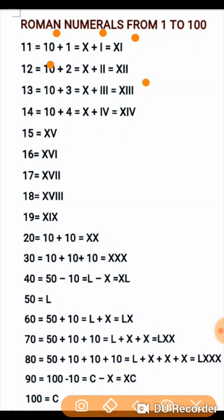Using these rules, you can easily form numbers 15, 16, 17, 18, and 19. After that, let us come to round numbers. 20 can be written as 10 plus 10, which is X plus X, shown as XX.